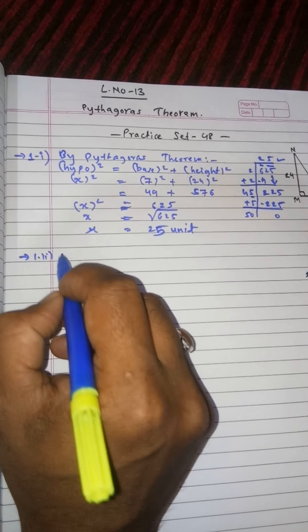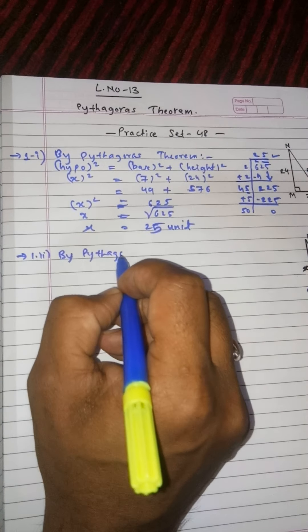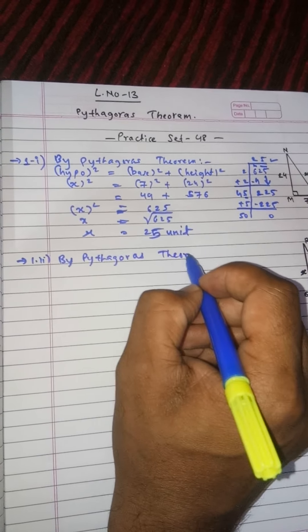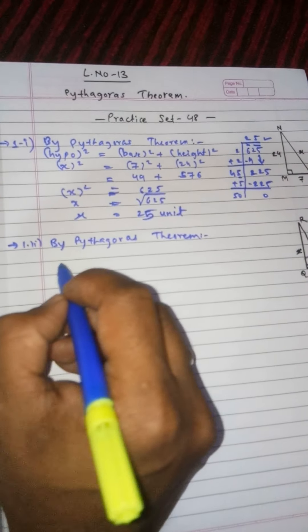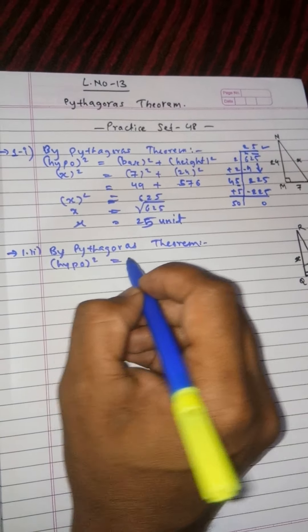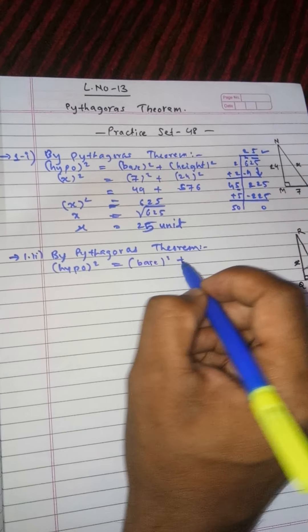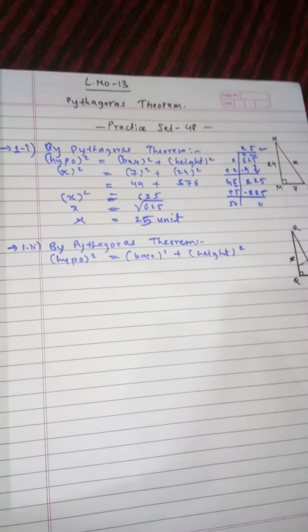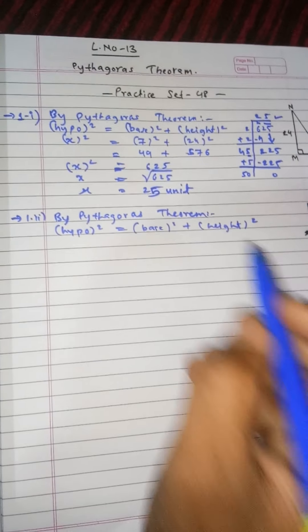Right here answer number one and the second one from that. Again right here, by Pythagoras theorem, you know the theorem. Hypotenuse squared is equals to base squared plus height squared, formula.